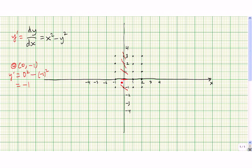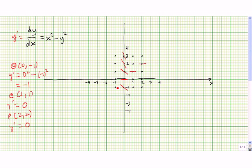Now let's go to the point (1,1). At (1,1), y prime is equal to 1 squared minus 1 squared, so that's equal to 0. So at the point (1,1), we need to have a slope of 0 again. So we had a slope of 0 at the origin (0,0), at the point (1,1), and let's check at the point (2,2). At (2,2), x squared minus y squared is 0 again. In fact, any time the x and the y coordinate is the same, we're going to have a slope of 0. So at (2,2) we have a slope of 0, and at (-1,-1) we have a slope of 0.